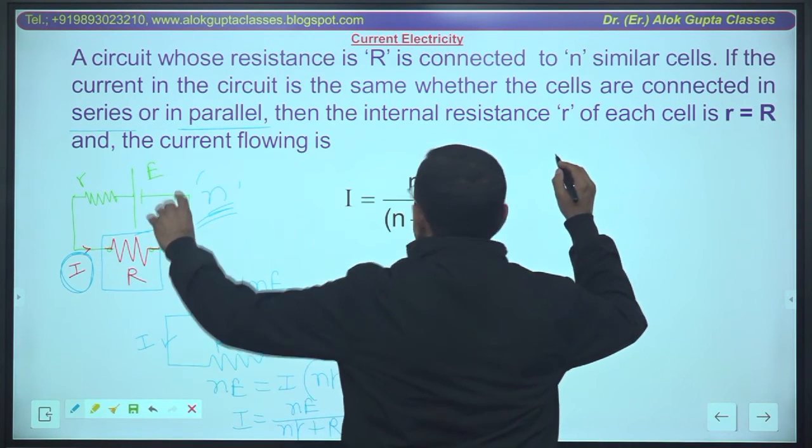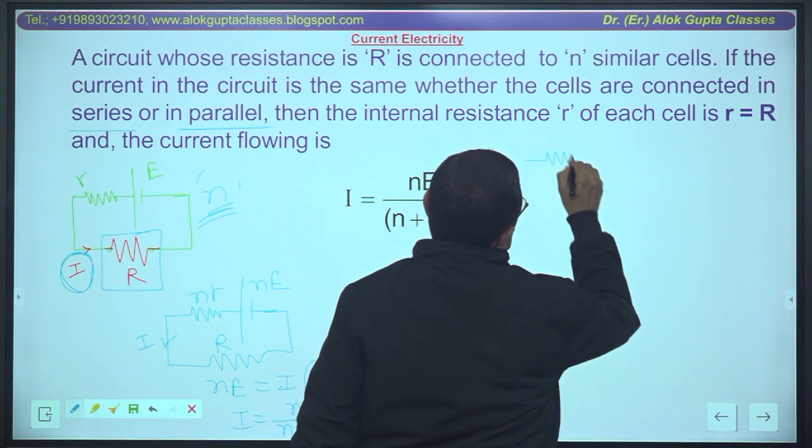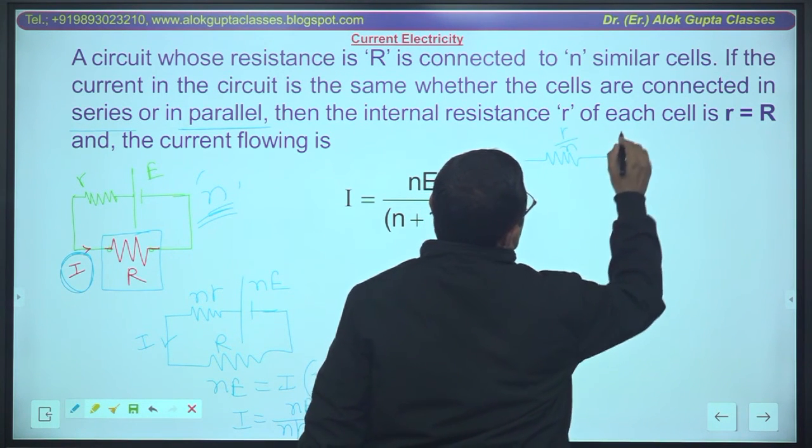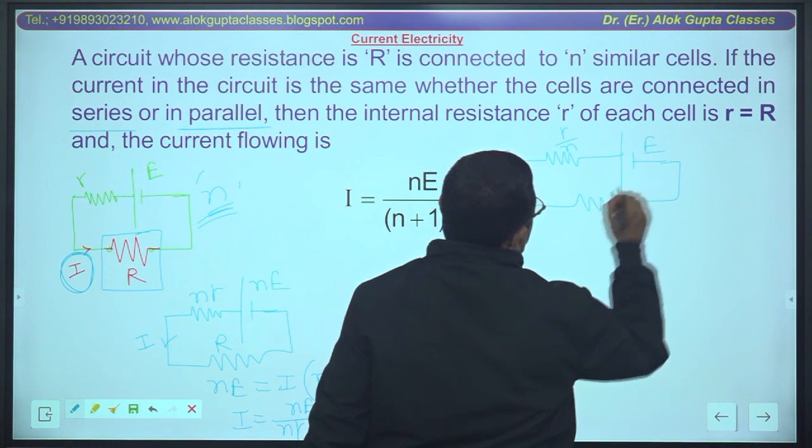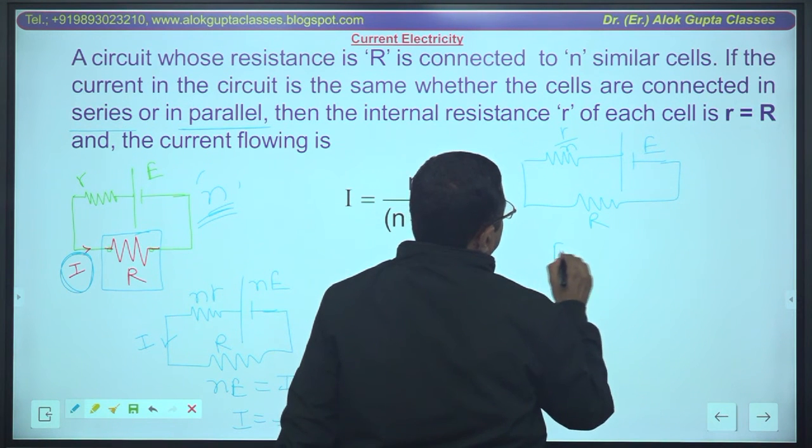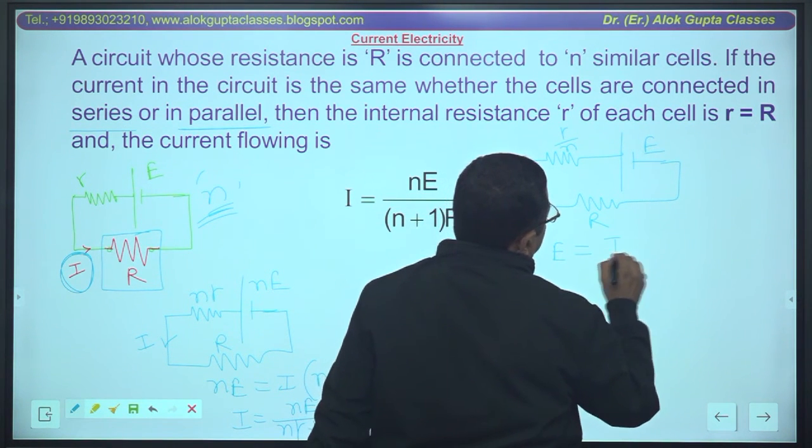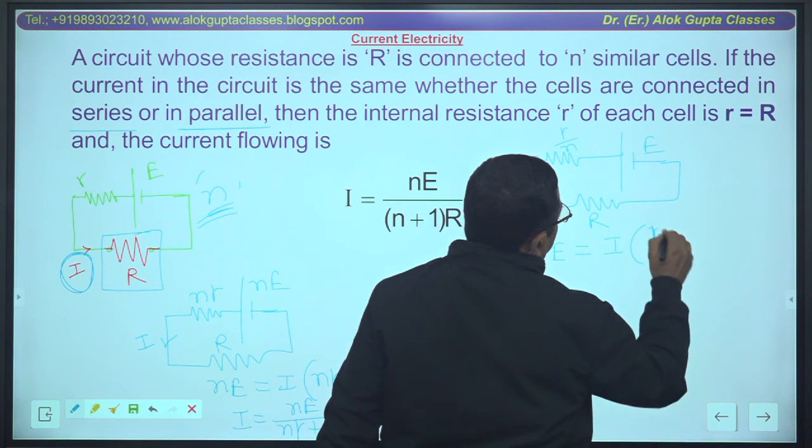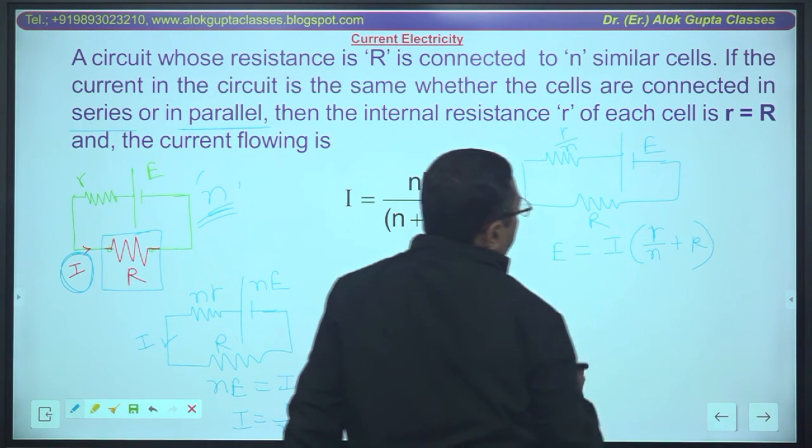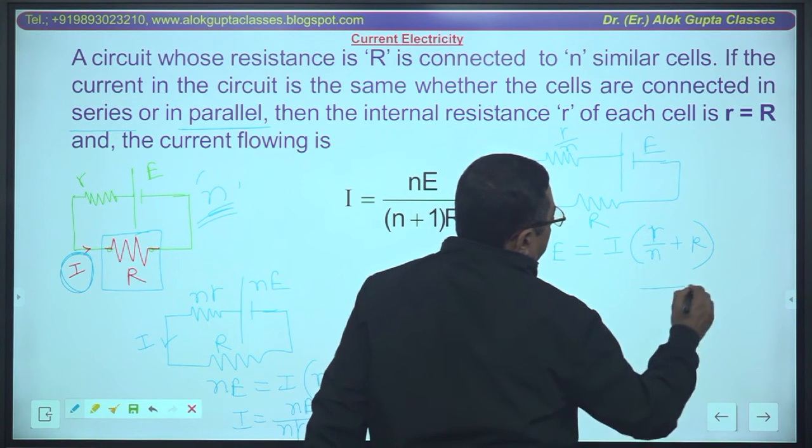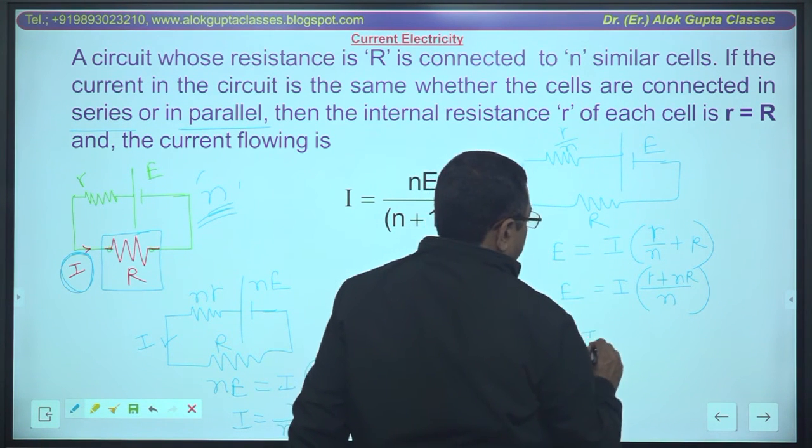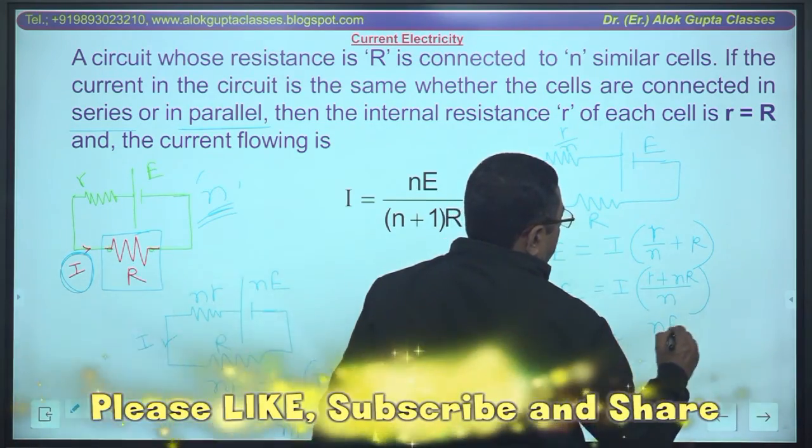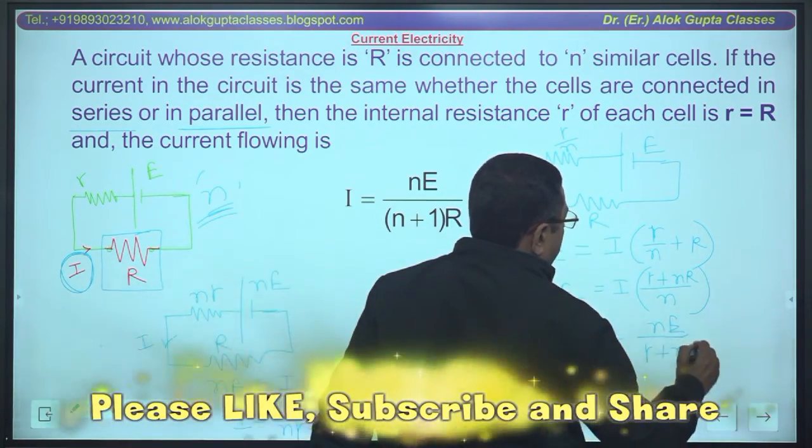When they are connected in parallel, if you remember parallel, then it is r by n, emf remains same, it is E, external resistance is R. Condition is Ohm's law: E equals i into r by n plus R. Take LCM here: n, it is r plus nr, E is equal to this. So current here is nE divided by r plus nr.